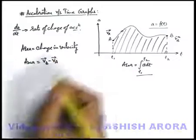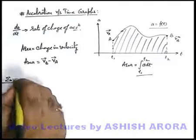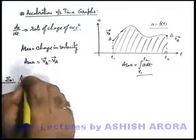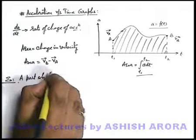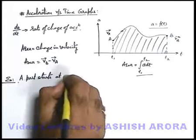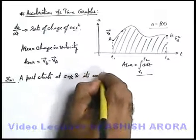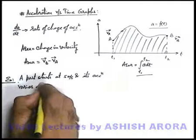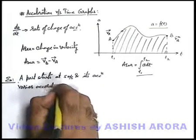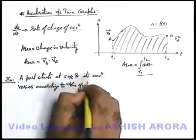If we just take up a simple example to analyze this concept, we can say if a particle starts at 5 meters per second and its acceleration varies according to the graph shown. We just draw the graph also.